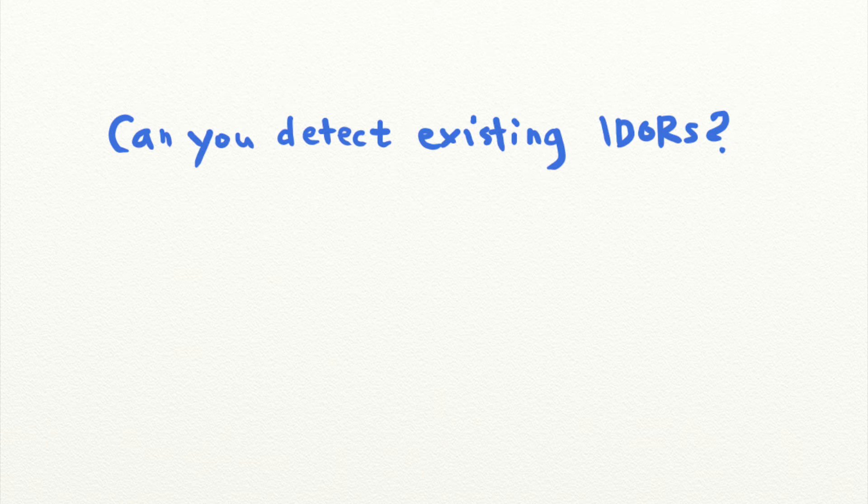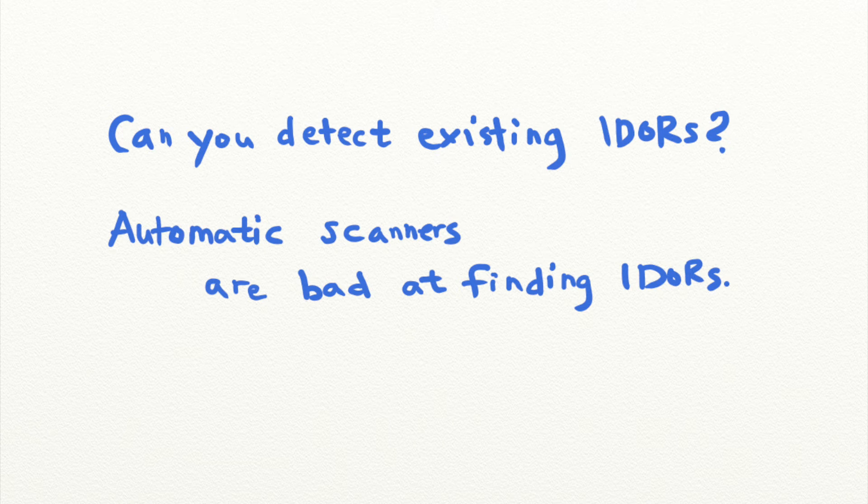So is there a way to find IDOR vulnerabilities that are already out there haunting your application? Automatic vulnerability scanners are pretty bad at finding IDORs because they cannot recognize what resources require which kind of protection.